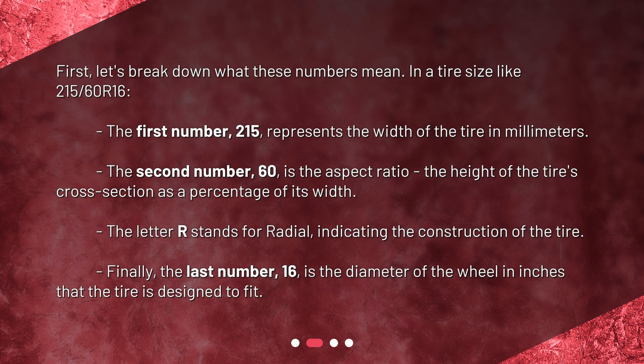First, let's break down what these numbers mean. In a tire size like 215/60R16, the first number, 215, represents the width of the tire in millimeters. The second number, 60, is the aspect ratio — the height of the tire's cross section as a percentage of its width. The letter R stands for radial, indicating the construction of the tire. Finally, the last number, 16, is the diameter of the wheel in inches that the tire is designed to fit.